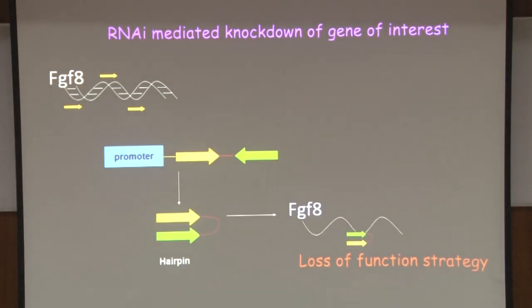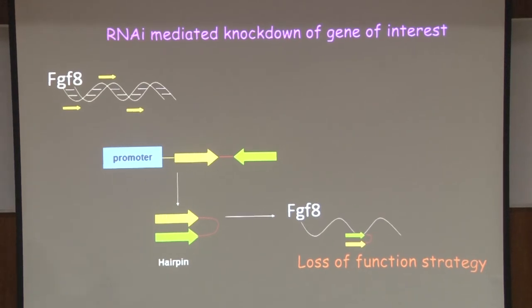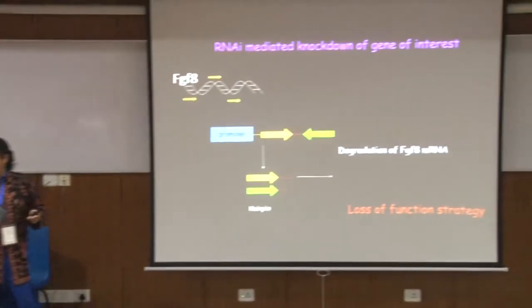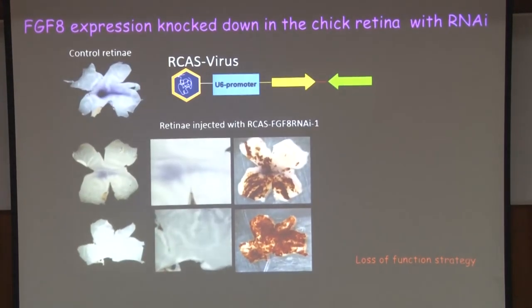RNAi has recently been adopted in chick as well for loss of function. All this time I was telling you about gain of function — over-expressing a gene, mis-expressing a gene, putting a bead, surgical manipulation. But you can do loss of function through RNAi: you make a double-stranded hairpin RNA that targets your gene of interest and causes degradation of its mRNA. This has been done successfully.